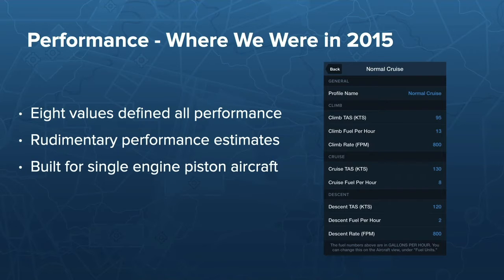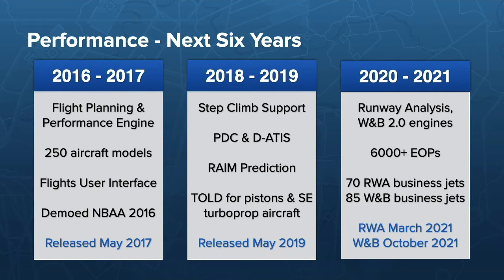2015 is where I want to take you back to. On the right side, you see our basic performance model — that still exists today, but in 2015, that's all we had. Your entire climb, cruise, and descent performance was calculated based on eight numbers only. That worked decently well for a Cessna 172, but beyond that, forget about it. So we knew we had to do something about this, and over the next six years we consecutively added more features and capabilities.